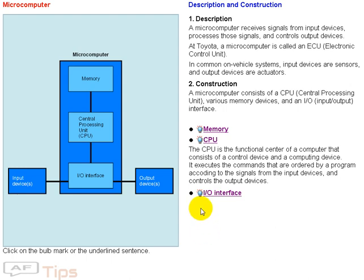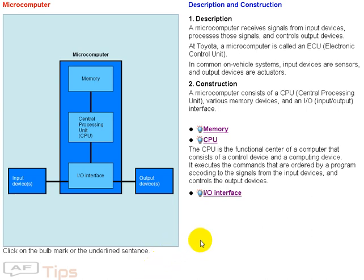The CPU is the functional center of a computer that consists of a control device and a computing device. It executes the commands that are ordered by a program according to the signals from the input devices, and controls the output devices.